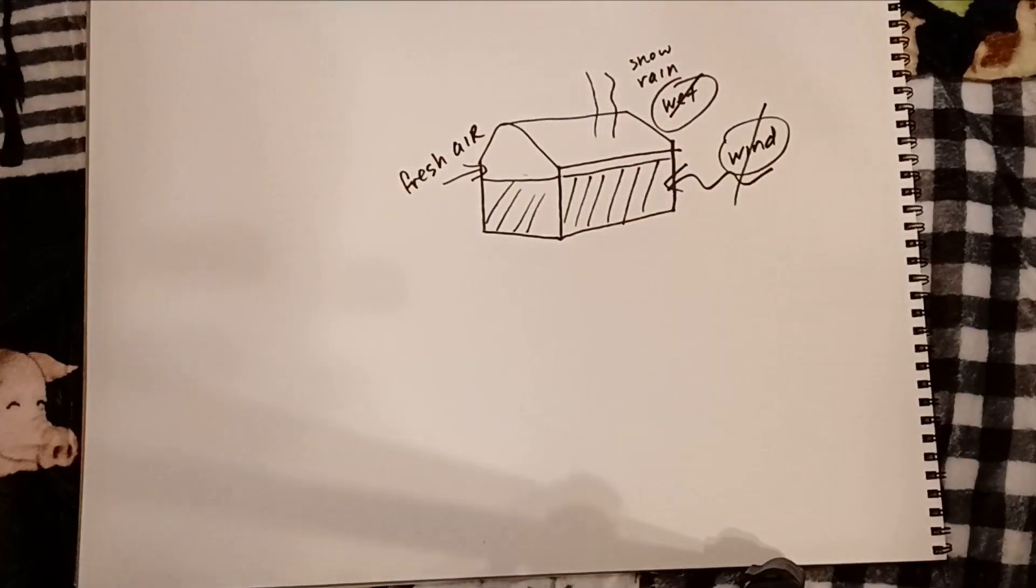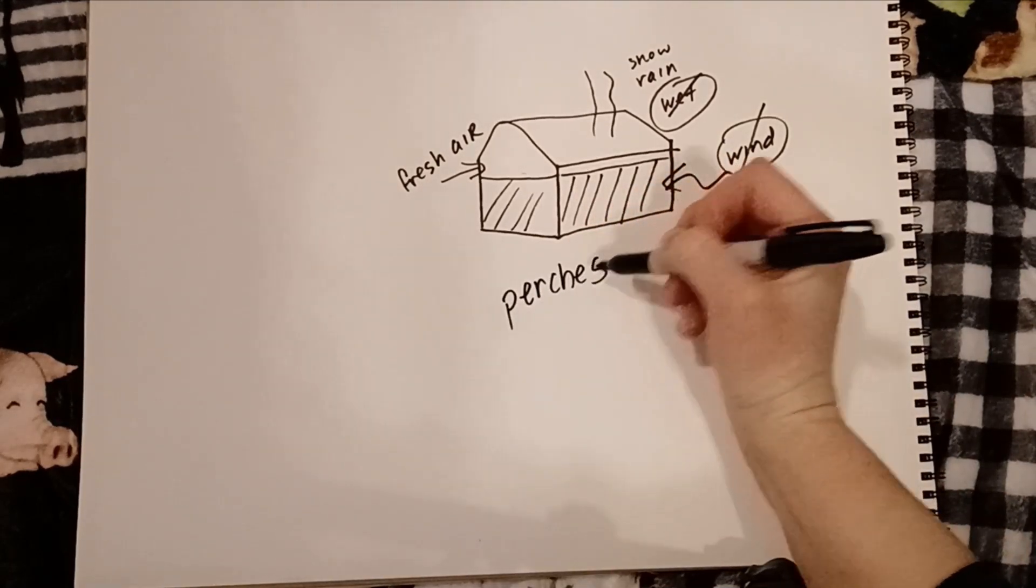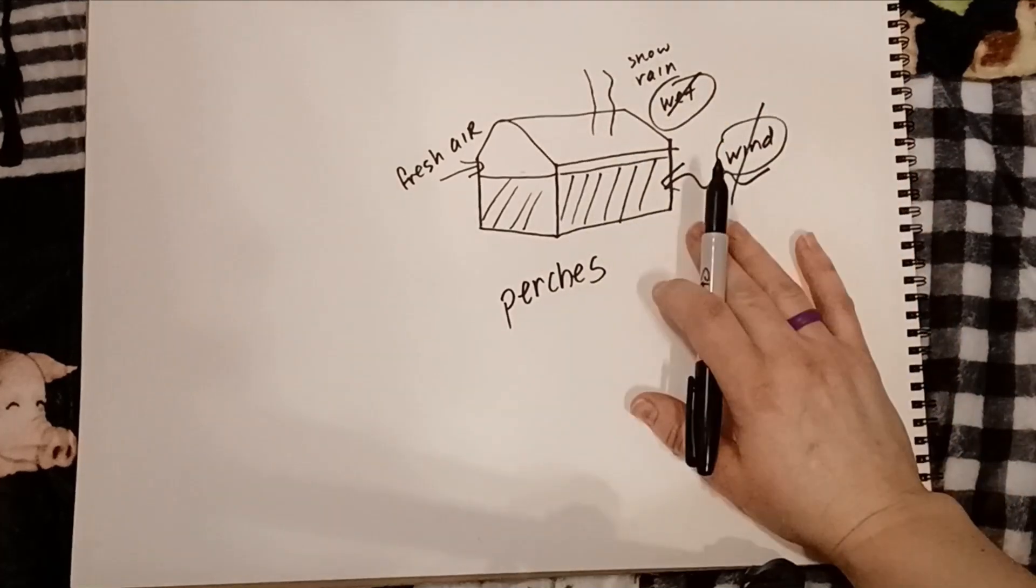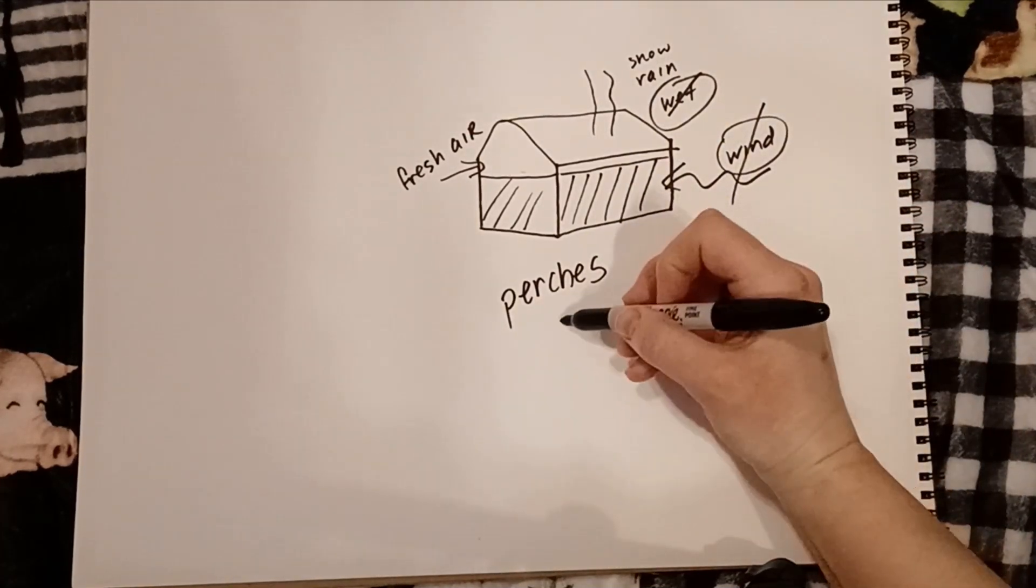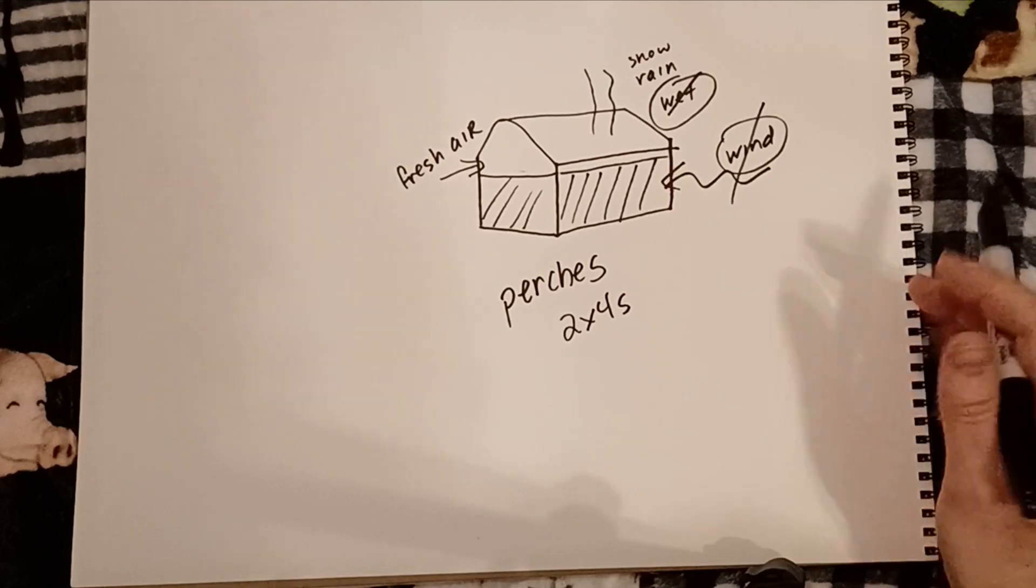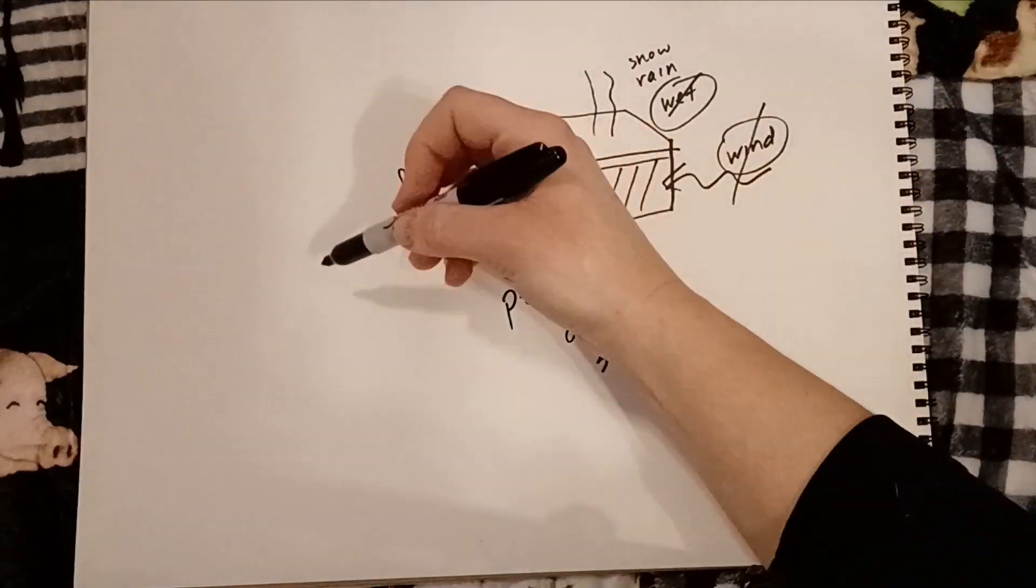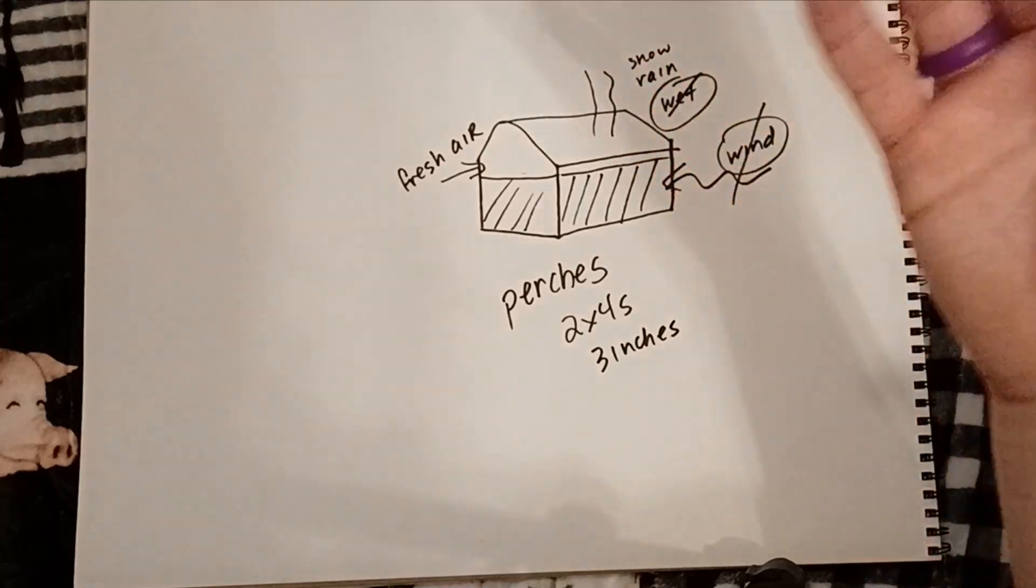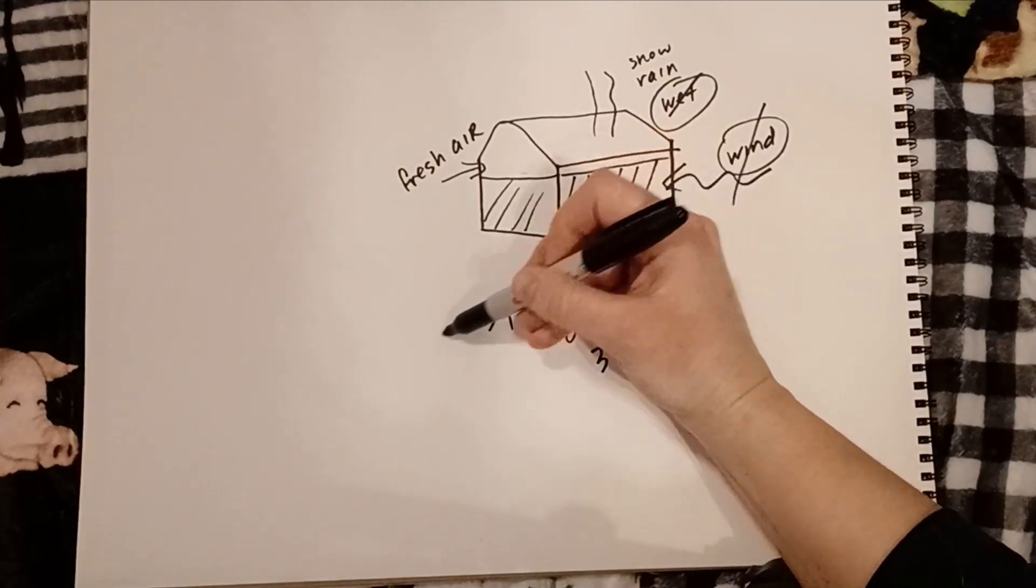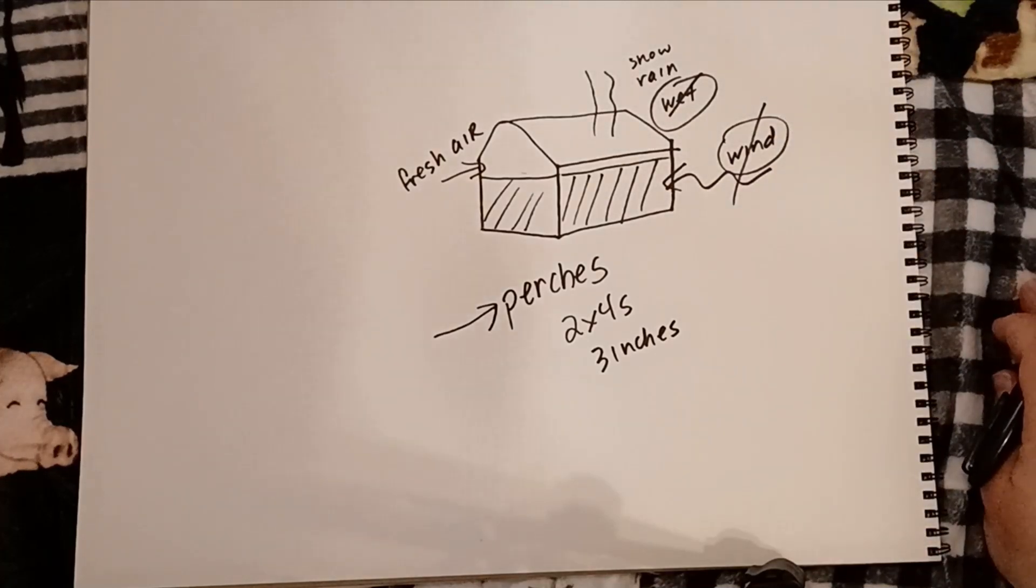So another thing you'll want to keep in mind is you want to provide them with perches of some kind because they're going to need to be directly off the ground. Anytime your chicken's touching that cold ground that's going to suck the warmth right out of their little feetsies. So you're going to want to provide them with perches. Two by fours are the ideal, but you can also use large branches. I would use something that's at least three inches across and thick, so like a good size branch, and that's going to be something so that they can get off of the ground. They're not going to be touching those cold surfaces and they're going to be able to cover their feet with their feathers. So provide them with perches so that they can get off of the ground and away from that cold, those cold temperatures.